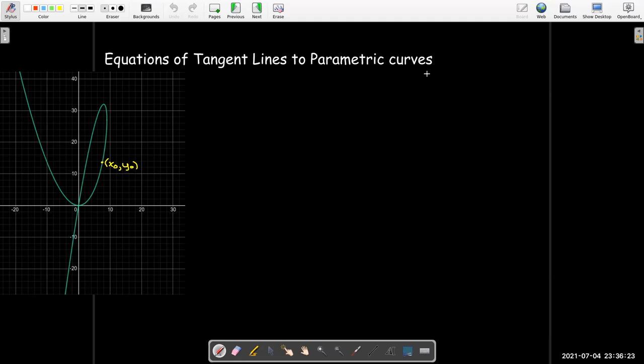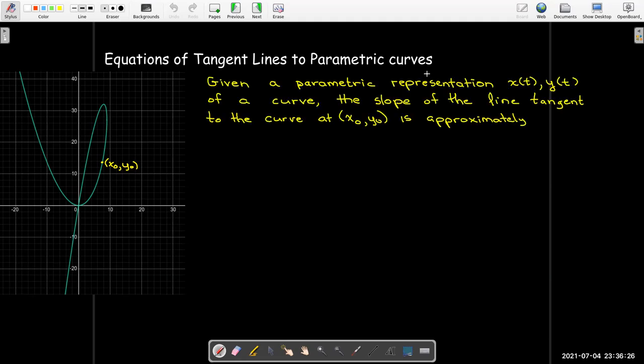So if I have a parametric curve and a specified point with coordinates x0, y0, we could approximate the slope of the tangent line using delta y over delta x. Now, x0 means x of t0, y0 is a y value at t0. So there's a single value of t which gives me x0 and y0. So I move a little bit away from t0 to delta t, and then I subtract off y of t0 and then x of t0 plus delta t minus x of t0.